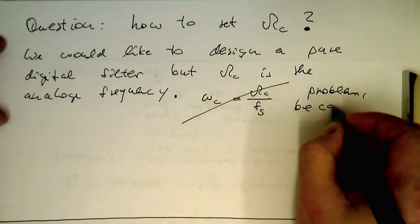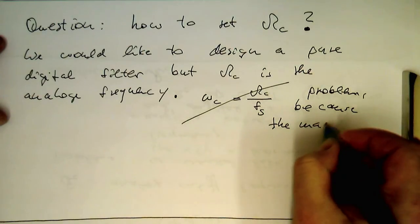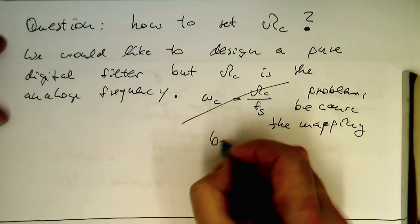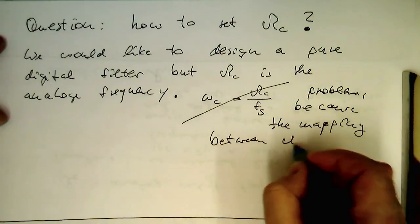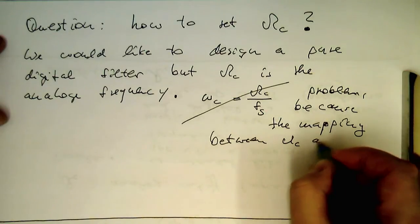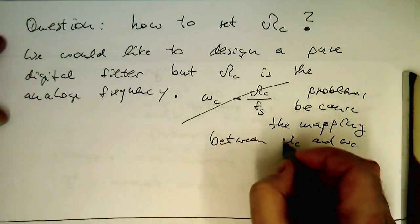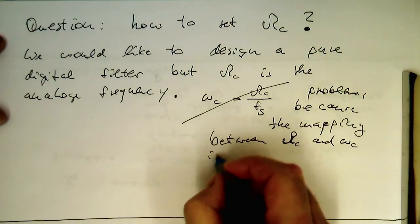Because the mapping between omega c and omega c, small omega c, that's our capital omega c, is non-linear.